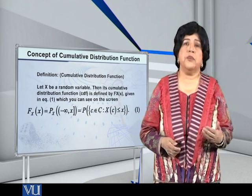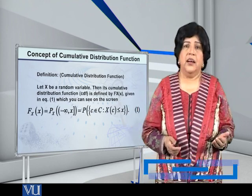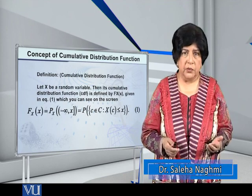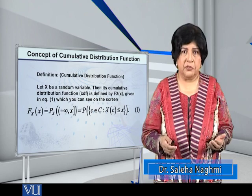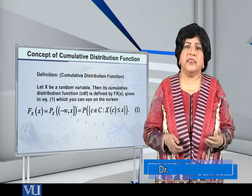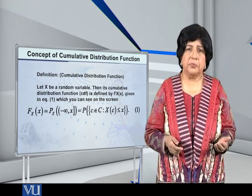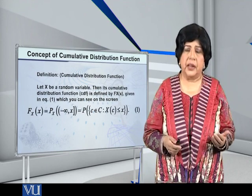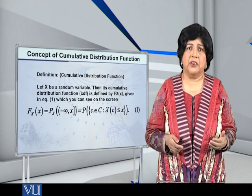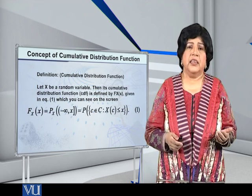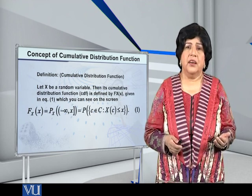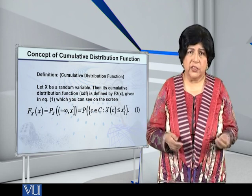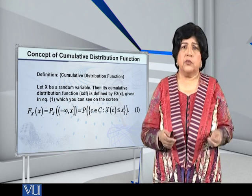So let us begin with the basic definition. What is the definition of a cumulative distribution function? That is a CDF. Let x be a random variable. Then its cumulative distribution function is defined by capital F of x is the probability of x lying between minus infinity and small x.